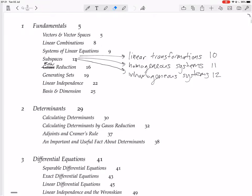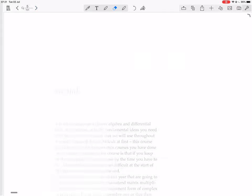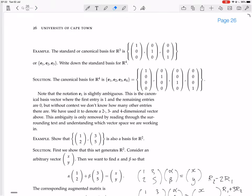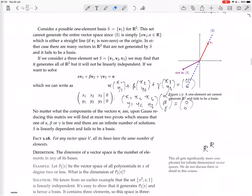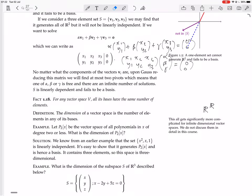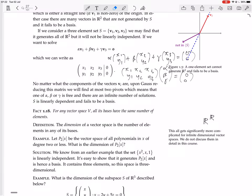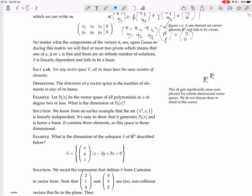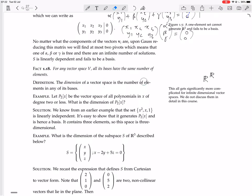We are still busy looking at basis and dimension. We've seen that a basis is a set that's linearly independent and generates a vector space. For any vector space V, all its bases have the same number of elements. That you can define the dimension of the vector space as the number of elements in any of its bases.